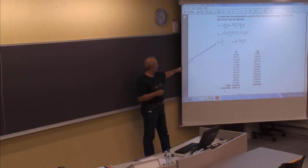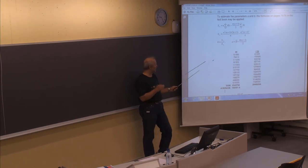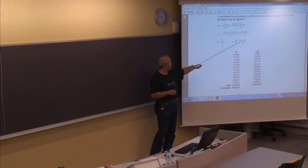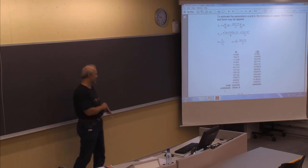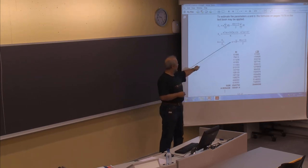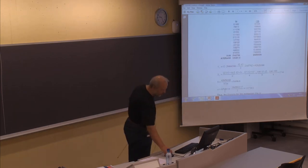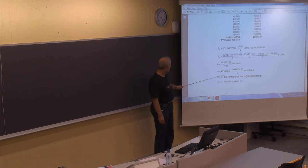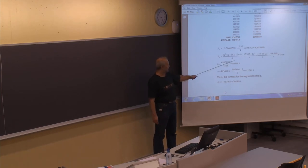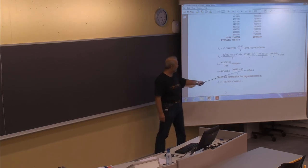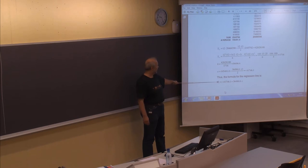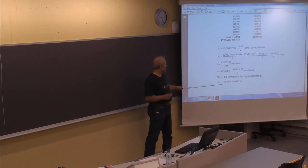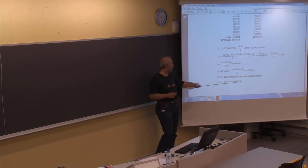With the B value, we can calculate the A value — where the trend line meets the Y-axis when X equals zero. With values for A and B, we find the formula for the trend line. The B value is approximately 36,496.6, and the A value is approximately minus 41,746.1. So the estimated demand according to the trend line equals the A value plus the B value multiplied by the number of periods.